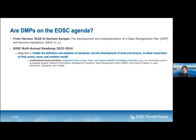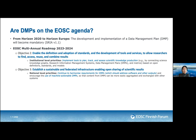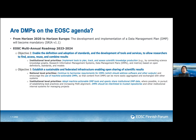When it comes to EOSC's objective on establishing a federated infrastructure, DMPs are identified as a priority at national level — continuing harmonization of requirements for DMPs, which should also address software and other outputs, and encouraging the use of machine-actionable DMPs. At institutional level, there is also reiteration of the need to adopt machine-actionable DMP tools and locally share institutional DMP data where possible, with the aim of establishing best practices and increasing FAIR alignment.